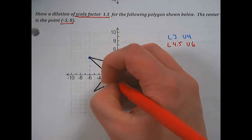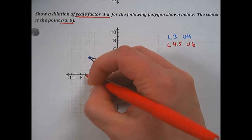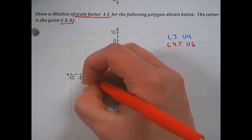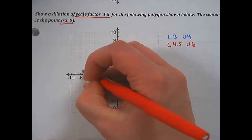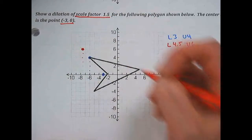So left from here, still starting from our center of dilation: 1, 2, 3, 4, and a half. So in between these two. And then up 1, 2, 3, 4, 5, 6. And there's my new point.